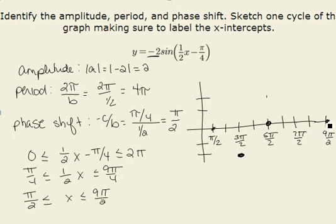Halfway between 5π over 2 and 9π over 2, or 7π over 2, it's reaching its maximum value. We are now ready to sketch one full cycle of our function.